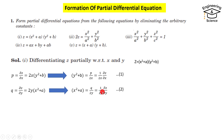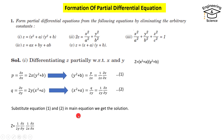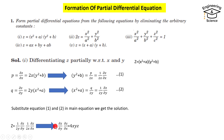Now, substitute equations one and two into the main equation to get the partial differential equation. We know 1 over 2y times partial z with respect to y equals x squared plus a, and 1 over 2x times partial z with respect to x equals y squared plus b. Substituting these and simplifying, we get partial z with respect to y times partial z with respect to x equal to 4xyz.